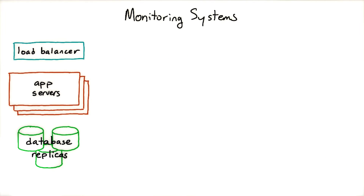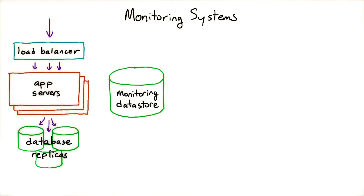One of the most flexible approaches to monitoring involves having some kind of key-value data store with a simple API to dump in whatever values you want to monitor. This is the approach favored by Graphite, InfluxDB, etc.